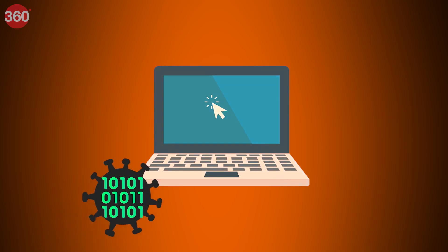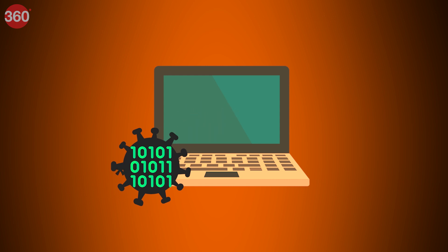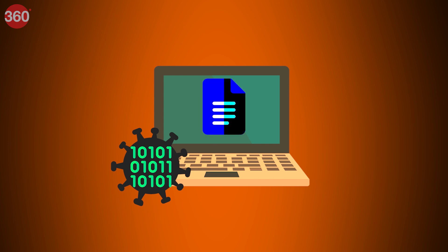To activate a virus, you have to run an infected file or program. Once the virus infects your computer, it can infect other computers on the same network as well. A virus can steal passwords or data, log keystrokes, corrupt files, spam your emails, and even take over your machine and turn it into a zombie.